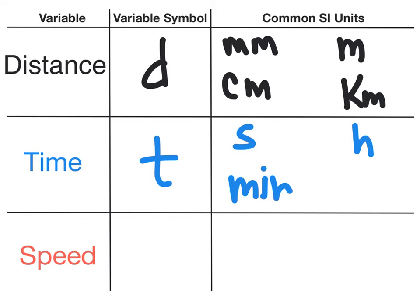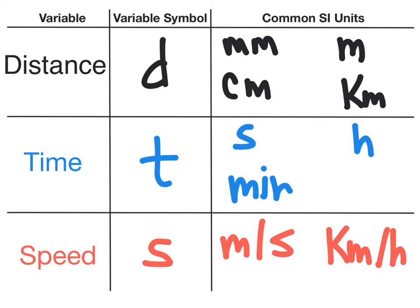The third variable is speed, which is how fast an object is moving. Its variable symbol is a lowercase s, and its common SI units are meters per second—we're saying how many meters that object is moving in one second—and kilometers per hour. Again, how many kilometers is that object moving in one hour?